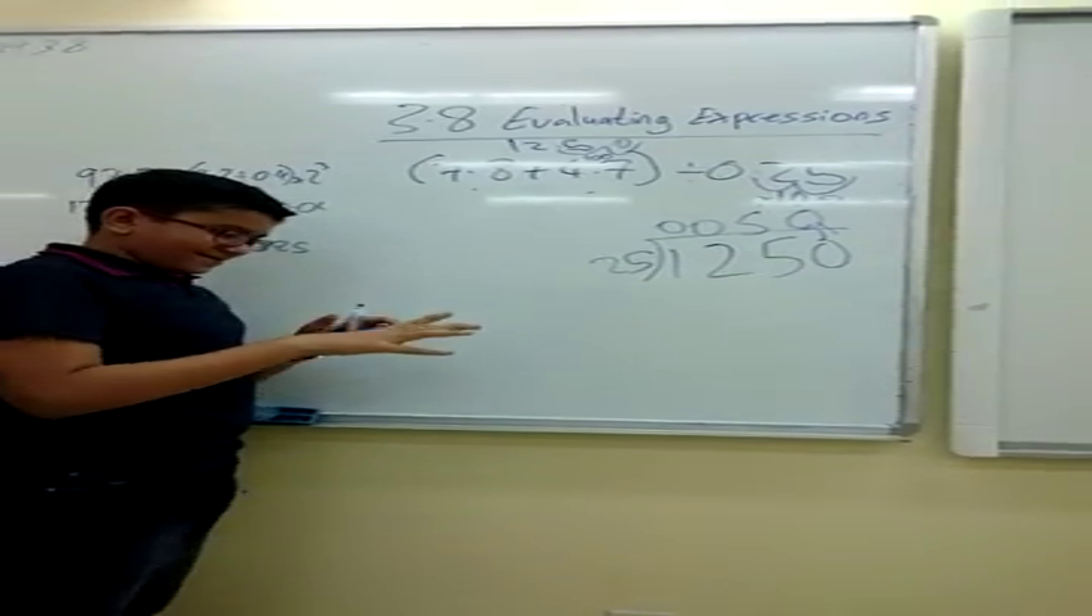It becomes 1250 divided by 25. 25 doesn't go into 1, it doesn't go into 12. It goes into 125 five times, and then there's 0. So the answer is 50. Excellent. Thank you, Isaac.